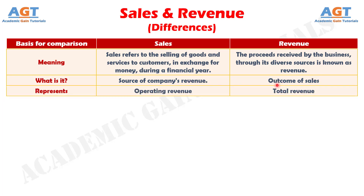Number 3: Sales represent the operating revenue, whereas revenue refers to total revenue of the business which includes both operating and non-operating revenue.